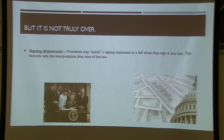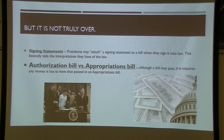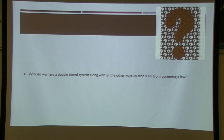Sometimes presidents attach a signing statement when they sign a bill — President Bush was famous for this, and Obama did it too — giving their own interpretation of the law. Also important and not covered in seventh grade: even after a bill is authorized, it still won't receive funding until it goes through a separate appropriations bill. So the authorization bill for the moped museum passes, but no money flows until the appropriations process — a whole second legislative process — approves the spending. This double-tier system is another way the framers ensured against frivolous laws and spending.